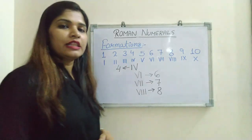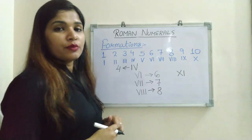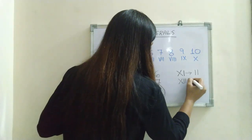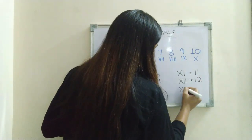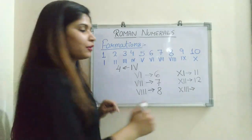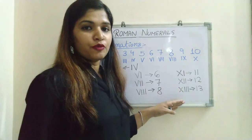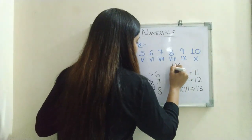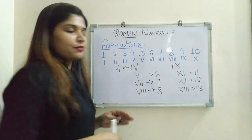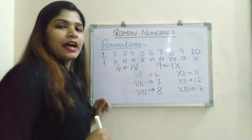The same rule applies with X. XIII means 1 more than 10, giving 11. XII means 2 more than 10, giving 12. XIII means 3 more than 10, giving 13. Again, we cannot repeat further. And if we place a smaller symbol before a larger number, like IX, it means 1 less than 10, giving 9. I hope you have understood this.